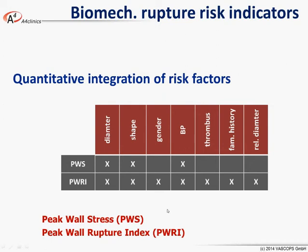The nice feature of these risk indicators is that they quantitatively integrate many known risk factors. For example, peak wall stress will increase if the diameter of the aneurysm increases — meaning it integrates the size effect, which is a known risk factor. But it also integrates shape effects: a highly asymmetric aneurysm is understood to carry a higher risk of rupture than a non-asymmetric one. Blood pressure is also a known risk factor and is integrated by this peak wall stress measure.